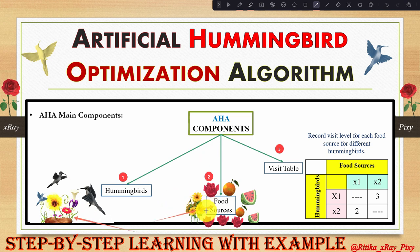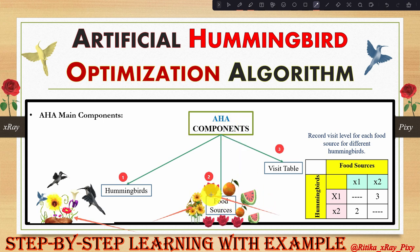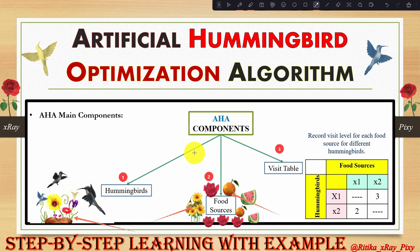The next component is food sources. In real life, hummingbirds evaluate food source properties: nectar quality, nectar refilling rate, last time visited, and flower content. For simplicity, each food source is assumed to have the same number and identical type of flowers. The food source represents the solution, and the nectar refilling rate is represented by the fitness value calculated for each food source.